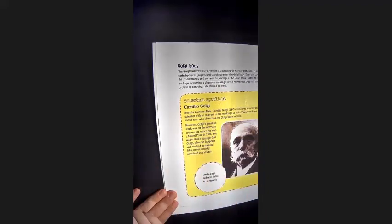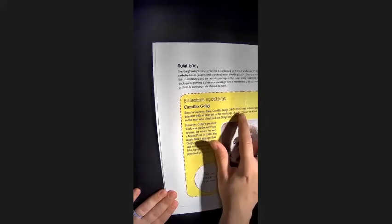Scientist spotlight. Camillo Golgi. Born in Corteno, Italy, Camillo Golgi, 1843 to 1926, was a doctor and scientist with an interest in the workings of cells.